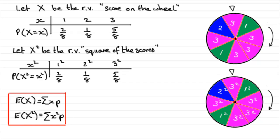So when it comes to working out E(X²) for this, what we've got is E(X²) equals essentially the sum of x² times the probability. So it's going to be 1² times 2/8.